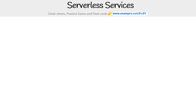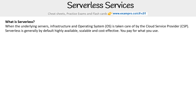Let's take a look at serverless services on AWS. This is not including all of them, because we're looking at the most purely serverless services. Before we do, let's redefine what serverless is. When the underlying servers, infrastructure, and operating system are taken care of by the CSP, serverless is generally by default highly available, scalable, and cost effective — you pay for what you use.